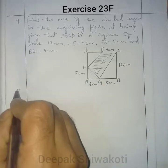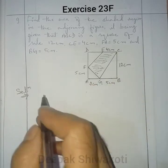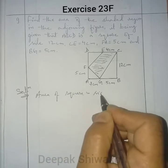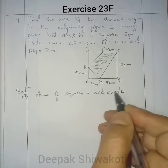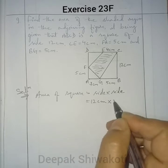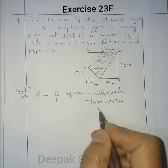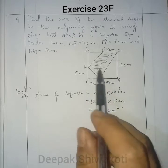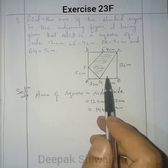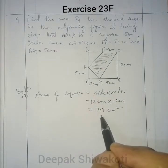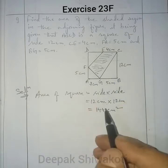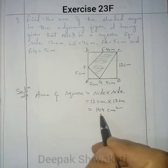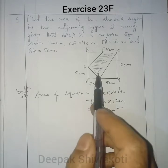First, we will find the area of the square. We know the area of a square is given by side × side. The side is given as 12 cm, so 12 × 12 = 144 cm². If we find the area of these three triangles and subtract their sum from the area of the square, we will get the area of the shaded region.